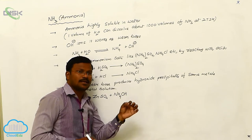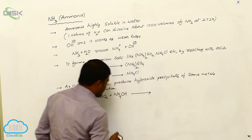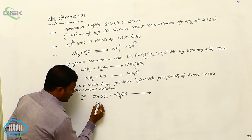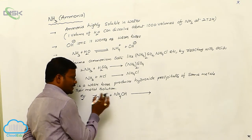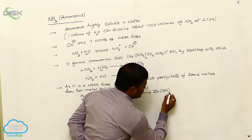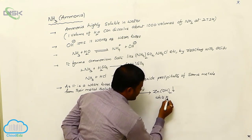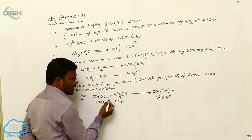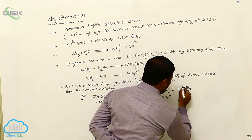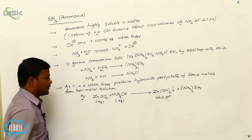Ammonium hydroxide, in a 1:1 ratio of ammonia and water, is considered dilute ammonia. This ammonium hydroxide reacts with metal solutions. Zinc sulfate in aqueous solution reacts with ammonium hydroxide and produces zinc hydroxide — a white color precipitate — along with ammonium sulfate, (NH₄)₂SO₄, using 2 moles of ammonium hydroxide.